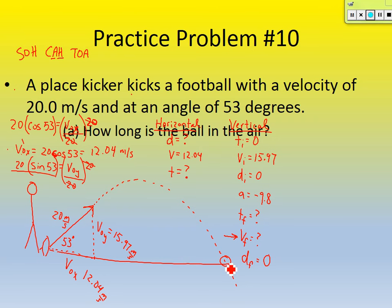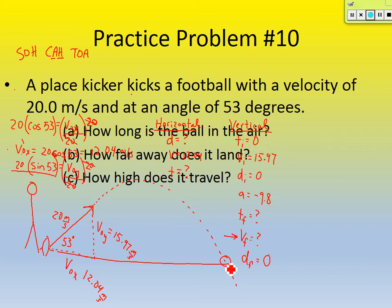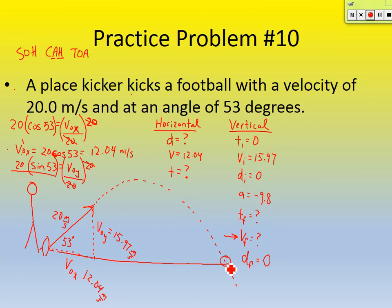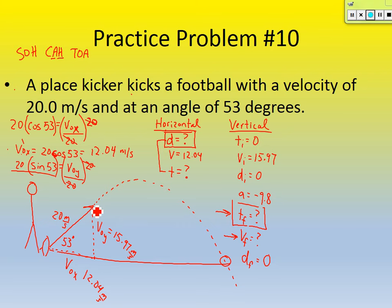The problem asks: how long is the ball in the air, how far away does it land, and how high does it travel? Those are the three questions we need to answer. I'm going to solve for time in the air. Can I use equation number one and solve for time horizontally? No, because I have two variables I don't know. So let's put a box around time final in the vertical column — this is the one we need to solve for first.